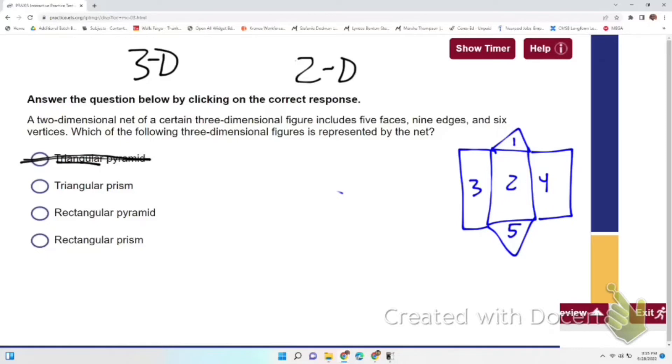Now we have a rectangular pyramid. A rectangular pyramid has a rectangular base and then it connects at the top as a pyramid. As a net it looks like this where the base is rectangular and it has triangle faces over along the sides that all fold up to make a pyramid. This has one, two, three, four, five faces as well, so I'm gonna hold on to that idea.